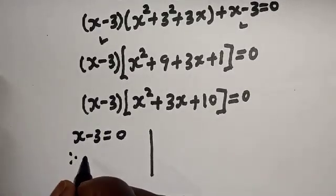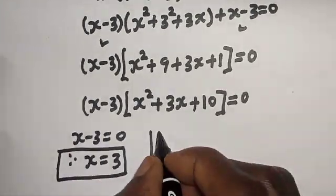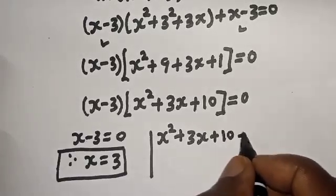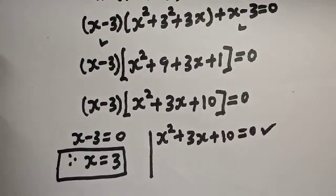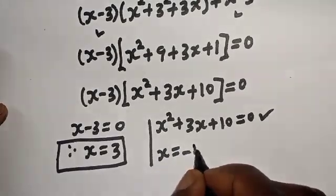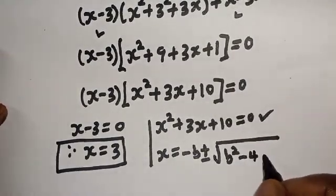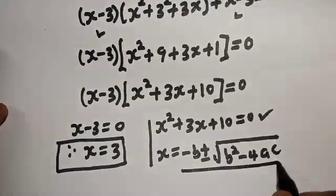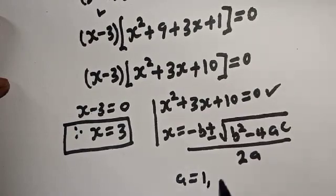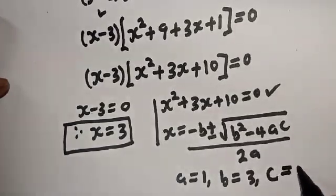There are two cases here. The first case is s minus 3 equals zero, therefore s equals 3 — this is the first value. The second case is s² + 3s + 10 equals zero. This is a quadratic equation which can be solved using the quadratic formula: s equals minus b plus or minus square root of b² minus 4ac, all over 2a, where a equals 1, b equals 3, and c equals 10.